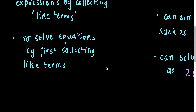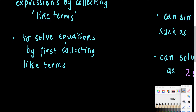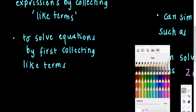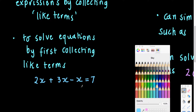We're also going to be able to solve equations that require us to first collect like terms. What I mean by that is we're going to have equations where you can have multiple x terms — something like 2x plus 3x take away x equals 7. We've got multiple terms with an x pronumeral, and we'll be able to collect those like terms together.